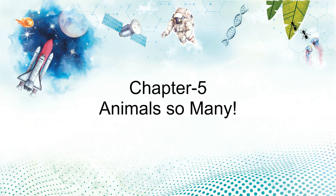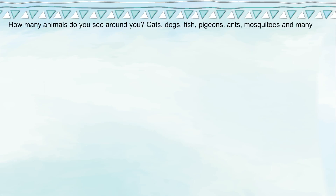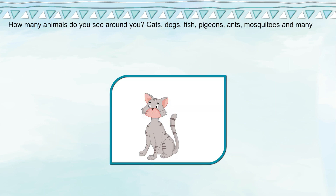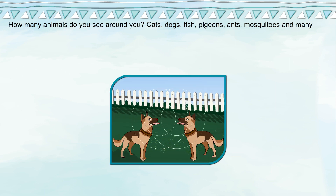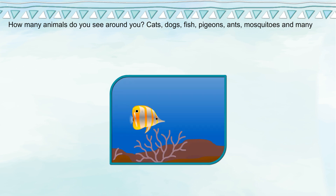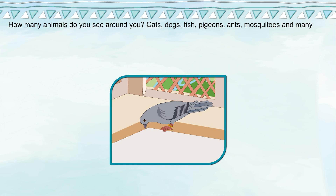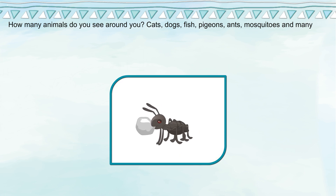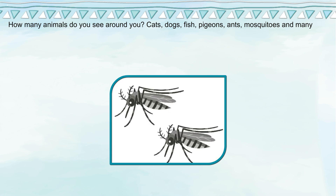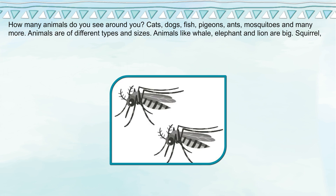Chapter 5: Animals. So many! How many animals do you see around you? Cats, dogs, fish, pigeons, ants, mosquitoes, and many more.